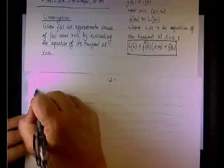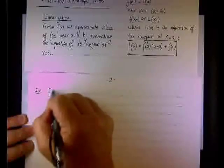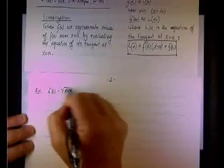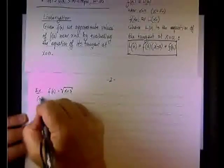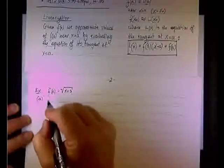In this example, f of x is the square root of x plus 3. Let's do a couple of things here. Part A, let's find the linearization of f of x near x equals 1.